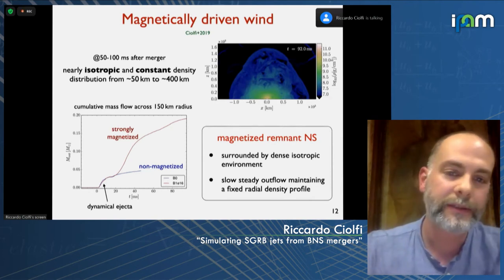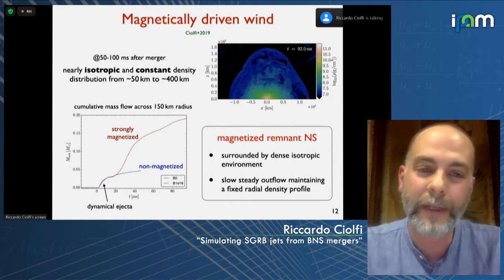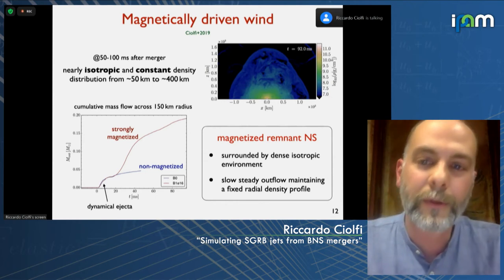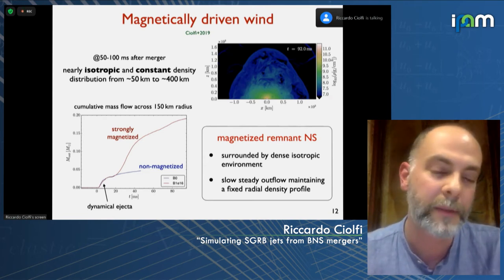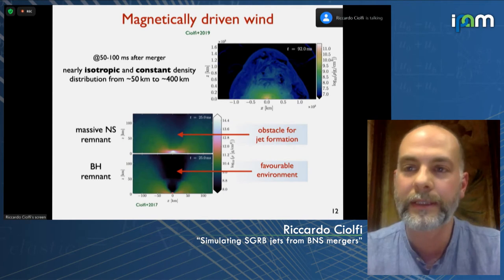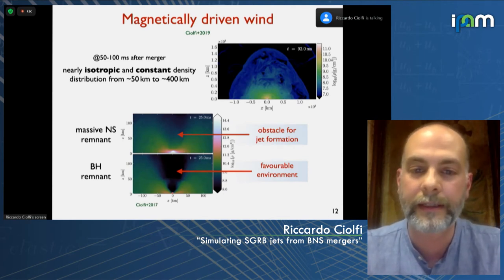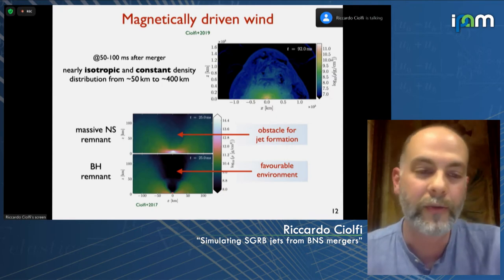This is important because if a jet forms at some point, it will have to drill through this environment — encountering a much denser obstacle that could choke jet formation entirely and prevent a short gamma-ray burst. This is different from the black hole remnant case, where along the spin axis of a black hole, the funnel has orders of magnitude lower density, giving the jet an easier path to drill through.